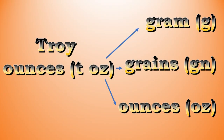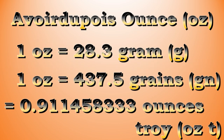First, we need to understand the symbols and correlations between a troy ounce and the other units of measure, specifically the gram, grains, and avoirdupois ounce. The avoirdupois ounce, commonly known as just the regular ounce, is the standard unit of measure for most items. One ounce equals 28.3 grams, 437.5 grains, and it is 0.9114 of a troy ounce.